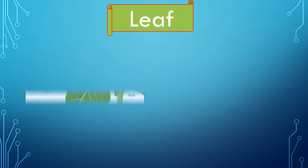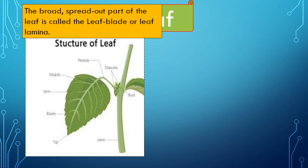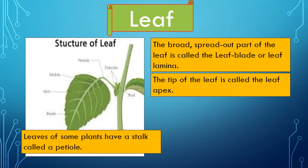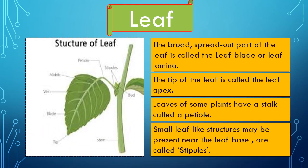The next topic is leaf. The broad, spread-out part of the leaf is called the leaf blade or leaf lamina, and its edges are called leaf margins. The leaf margin may be entire, dentate, or lobed. The tip of the leaf is called the leaf apex; it may be tapering, pointed, or rounded. Leaves of some plants have a stalk called a petiole. The portion of the leaf attached to the stem is called the leaf base. Small leaf-like structures present near the leaf base are called stipules.